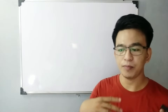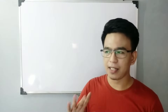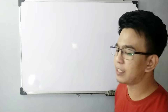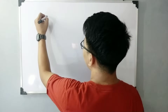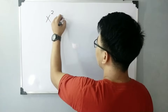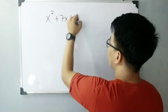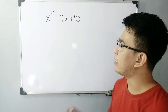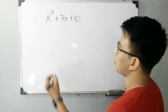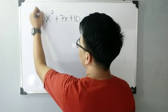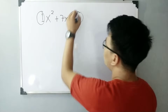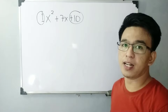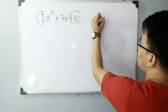So basically, this one is not that kind of difficult way on how to factor polynomials. So let's say for example, we have x squared plus 7x plus 10. So paano nga ba natin pina-factor? Before tayo mag-start, kailangan nating malaman na ang leading coefficient nito is equal to 1. So focus tayo sa 1 and 10. We need to multiply 1 and 10 and that will give us the product of 10.